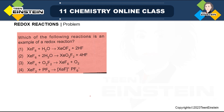We'll start with this problem: which of the following reactions is an example of a redox reaction? Here we have four reactions given, all involving different xenon compounds. To know whether a reaction is a redox reaction or not, we just have to check whether the oxidation number changes before and after the reaction. At least for one atom there must be a change in oxidation number, otherwise it will not be considered a redox reaction.